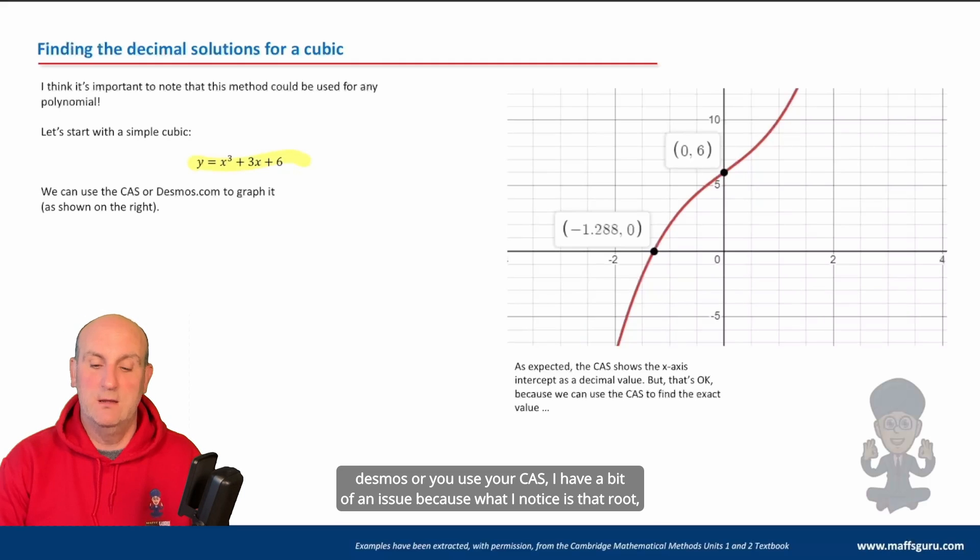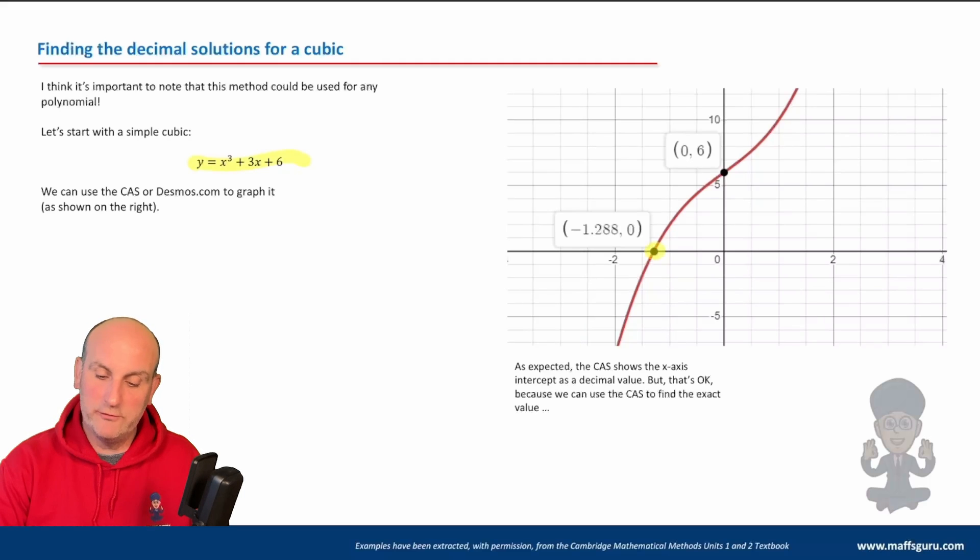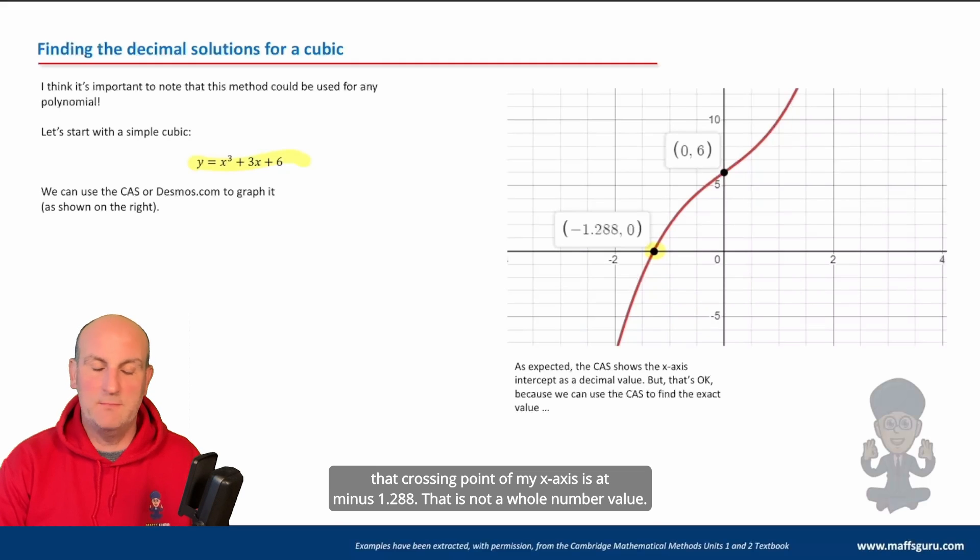Because what I notice is that root, that crossing point of my x-axis is at minus 1.288. That is not a whole number value.